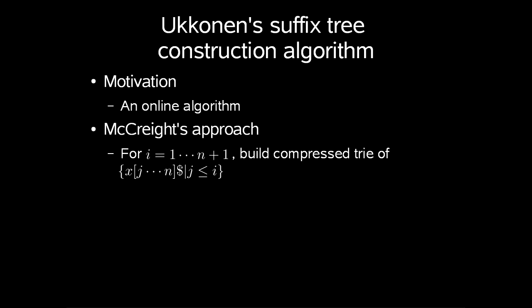So if you recall, McCreight's approach was for every i from 1 to n plus 1, build compressed trees of xj to n, followed by the dollar sign, where j is less than or equal to i.